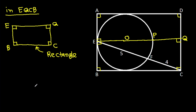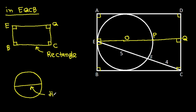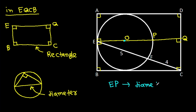Now, in any circle, a diameter makes an angle of 90 degrees on the circle. Here, we know that O is the center of the circle. That means EP will be the diameter. So angle EFP will be 90 degrees.